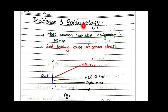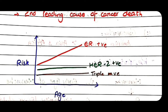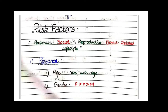Regarding incidence and epidemiology, breast carcinoma is the most common non-skin malignancy in women and is the second leading cause of cancer death — the most common cause being lung cancer. There is an important graph where the x-axis shows age and the y-axis shows risk of breast cancer. As age increases, the risk of developing ER positive breast cancer increases greatly, while this trend is weaker for HER2 positive or triple negative cancers, whose risk increases only slightly with age.